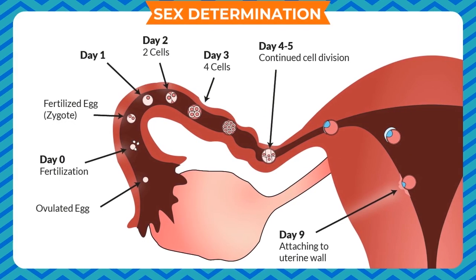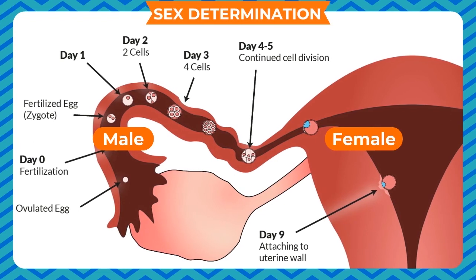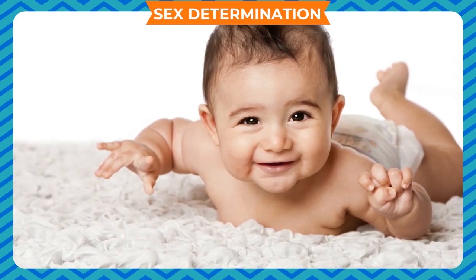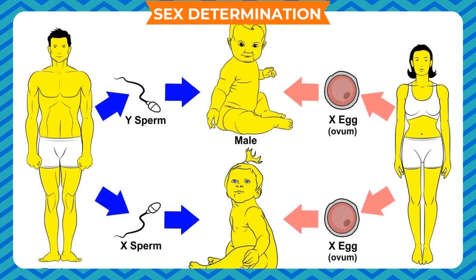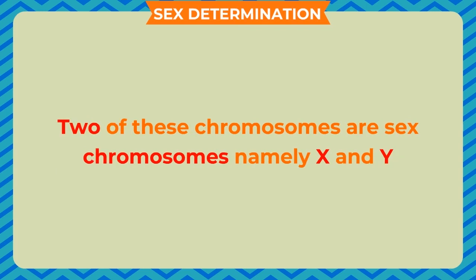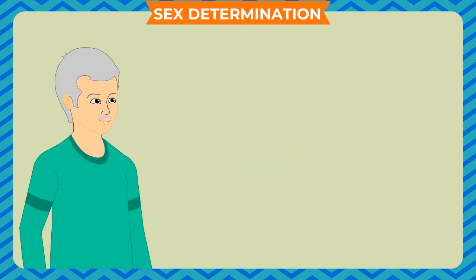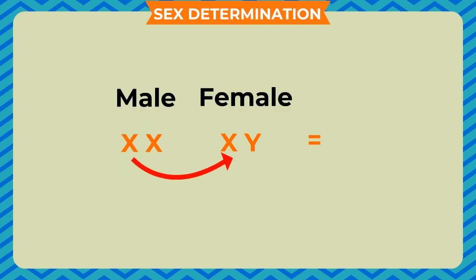After fertilization, the question arises whether the fertilized egg is male or female. The sex of the child is determined by the chromosomes present in the fertilized egg. All human beings have 23 pairs of chromosomes in the nuclei of their cells. Two of these chromosomes are sex chromosomes, namely X and Y. A female has two X chromosomes while a male has one X and one Y. The unfertilized egg always has one X chromosome. If this X chromosome fuses with the X chromosome of the sperm, the result would be a baby girl.